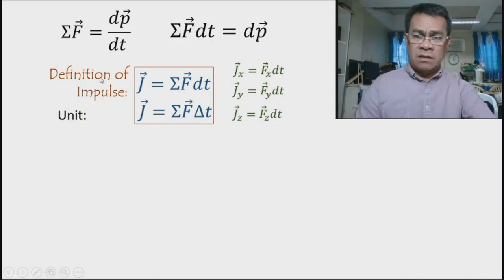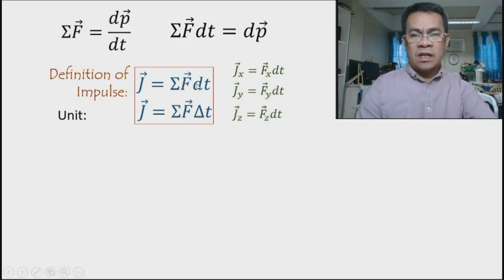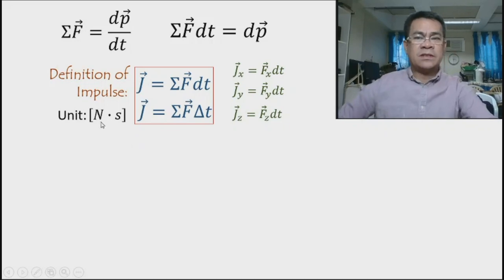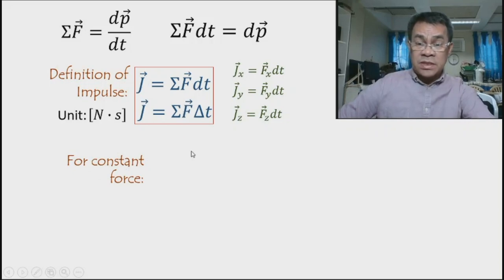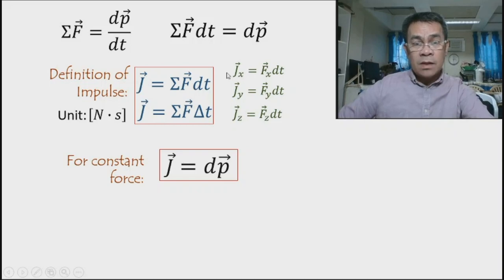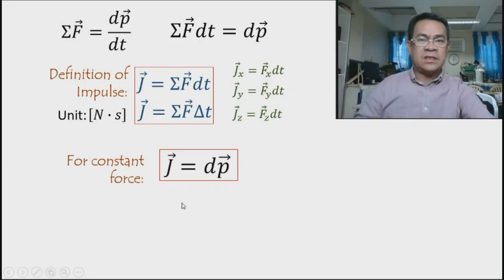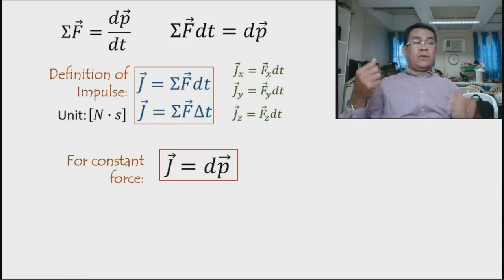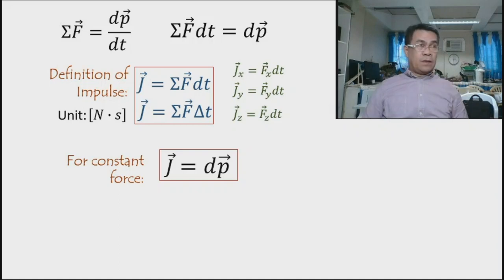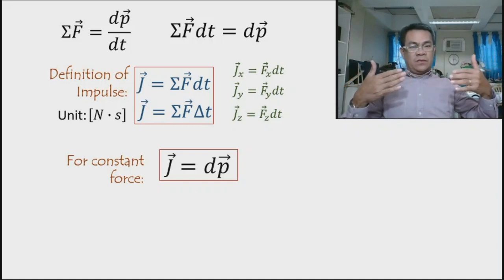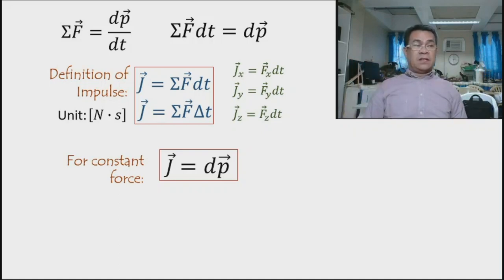The unit of impulse is found from its definition — force times time — so the unit is newton-seconds. If the force is constant, then J = Δp, meaning impulse equals the change in momentum. Before objects collide they have initial momentum, and after collision they have final momentum.